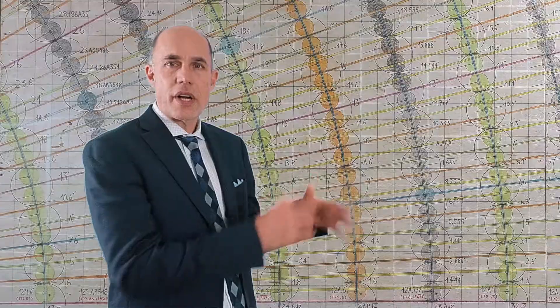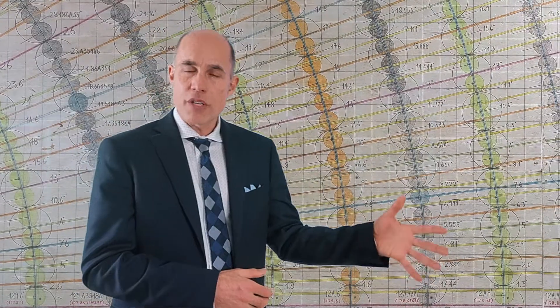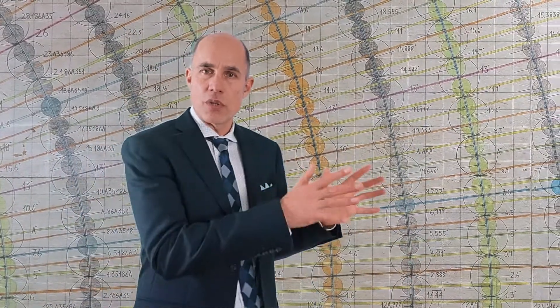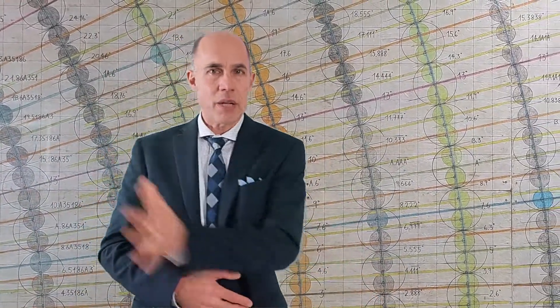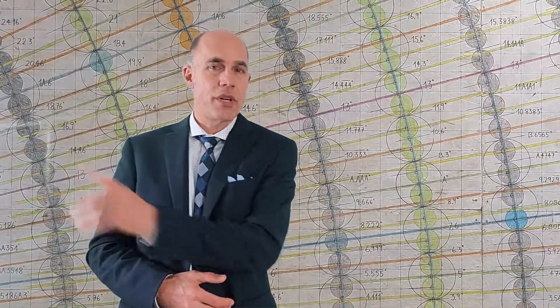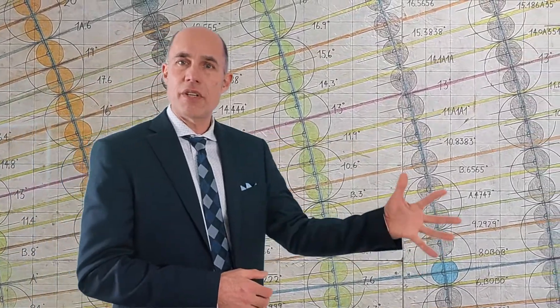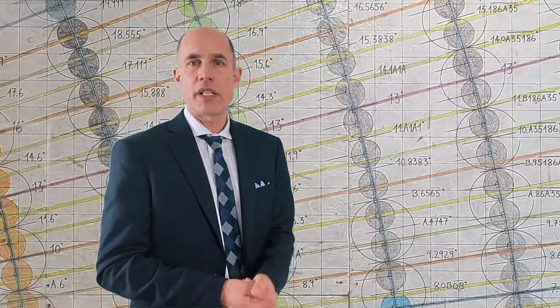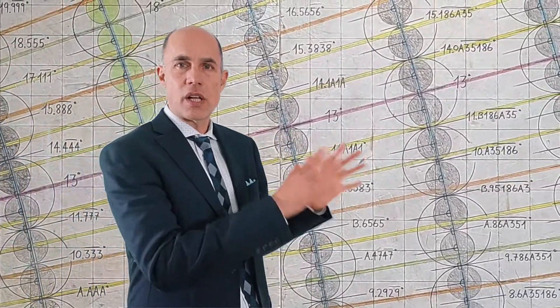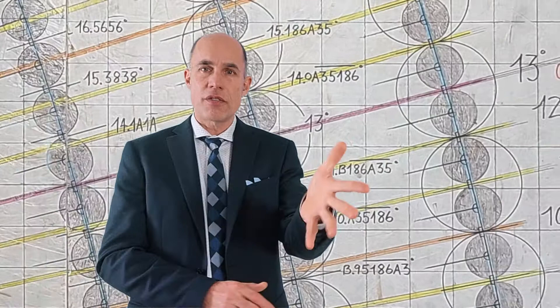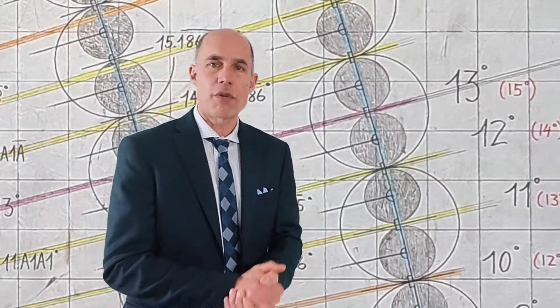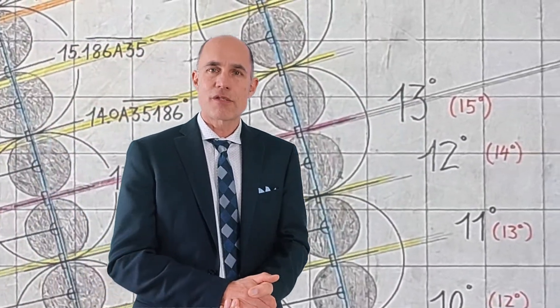The next ring in the diagram is the fourteenth ring, and those degree lines were already established on the seventh ring of the diagram. After that it's the fifteenth ring, so we're going to get into those degree lines and look at all the math in the next video. Hope you can join me for that — thanks for watching.